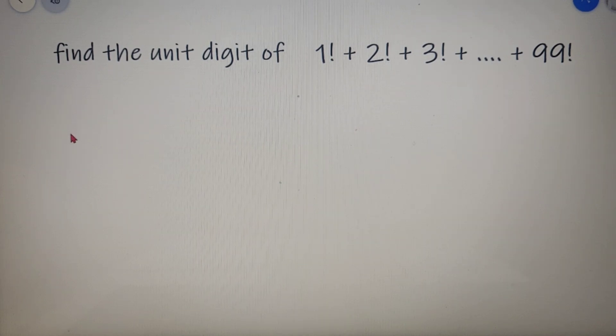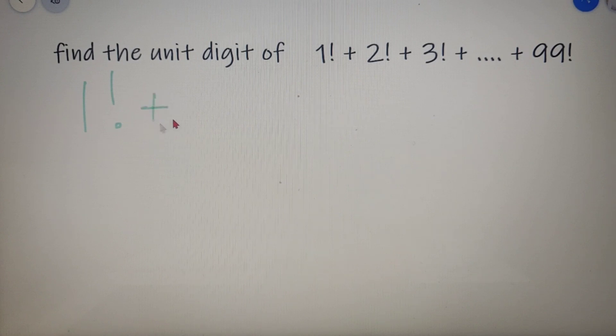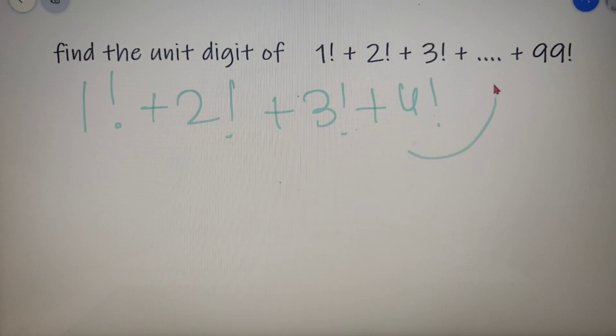So I can say that we just have to find the sum of the unit digits of 1 factorial plus 2 factorial plus 3 factorial plus 4 factorial and this will give us the answer for this case too.